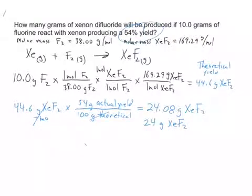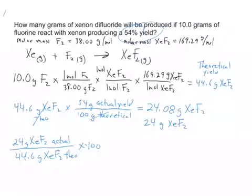Just to prove that that is 54%, let's take the 24 grams XeF₂. That's actual. And divide that by 44.6 grams XeF₂. That's theoretical. That's what we got in our calculation. And multiply that by 100. And what we get is 54%. So that's a check that we got the 54% with the two sig figs.